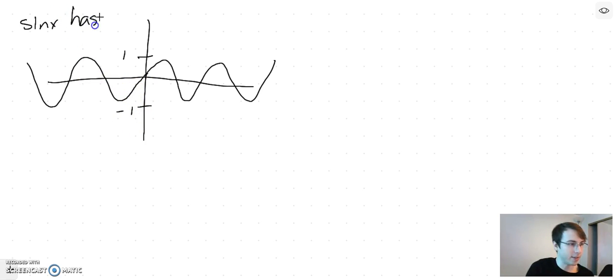So sin(x) has amplitude 1, because it's oscillating between 1 and negative 1. That's how far up you go, or down you go, in either direction.